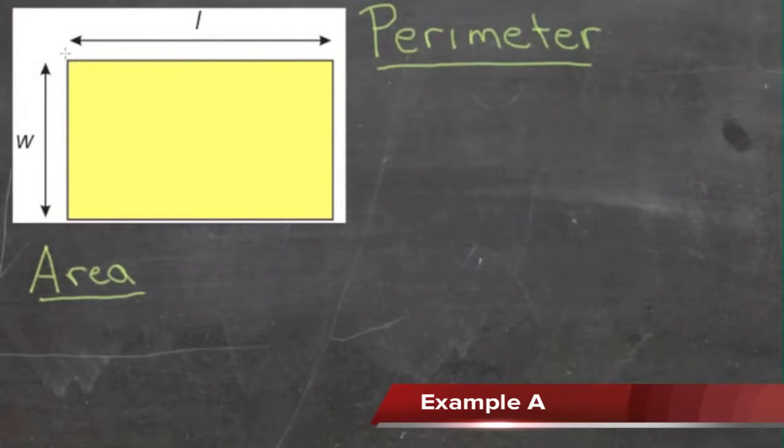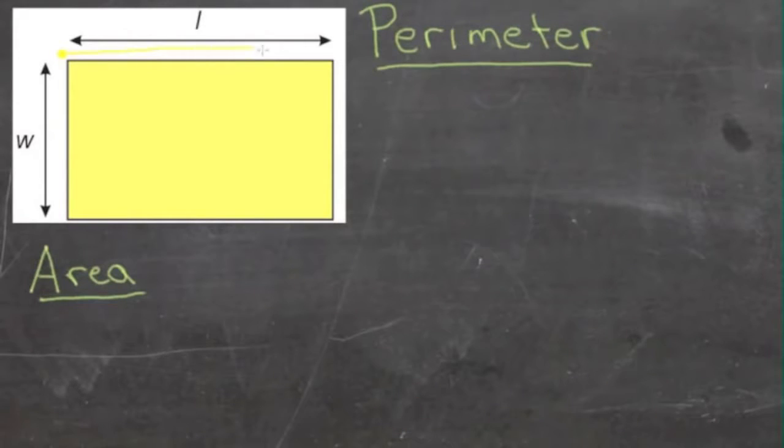To find the perimeter of a rectangle, we start in one corner and measure our way around the outside edges. Here, our measurements are given as L and W. If we start up here on the top left hand corner, first we have an L, then we turn the corner and have a W, turn the corner and get another L, and turn the corner and get another W again.